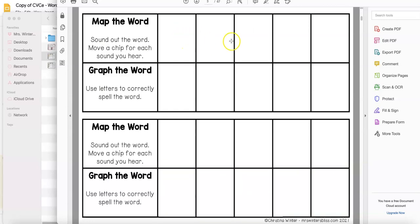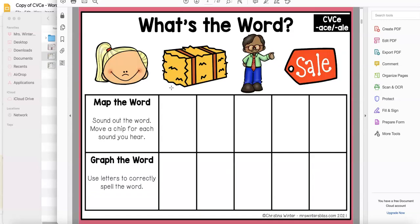The kids will put the counters or the chips here for each sound and then graph the word. They write the graphemes to spell the words or you can use these boards.